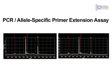Next, primer extension products are analysed by mass spectrometry in order to quantify the relative abundance of the two alleles.